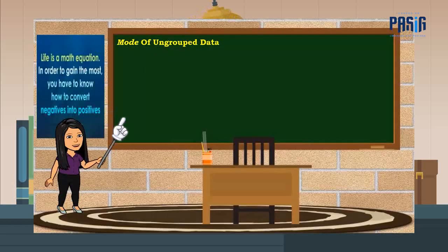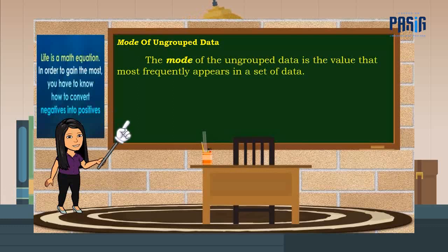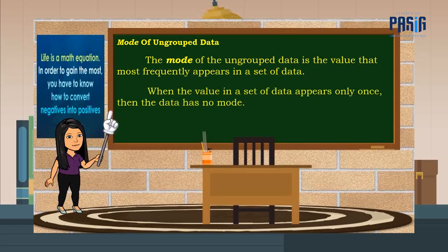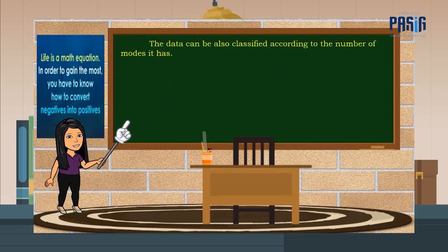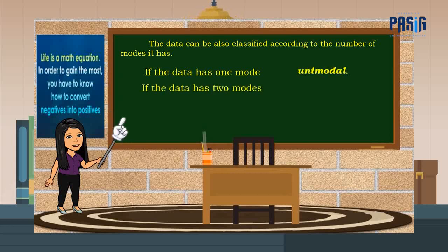Lastly, let us discuss the mode of ungrouped data. The mode of the ungrouped data is the value that most frequently appears in a set of data. When the value in a set of data appears only once, then the data has no mode. The data can be classified according to the number of modes it has. If the data has one mode, it is unimodal. If the data has two modes, it is bimodal.